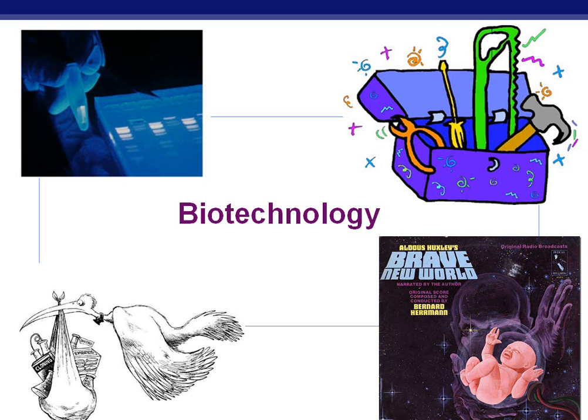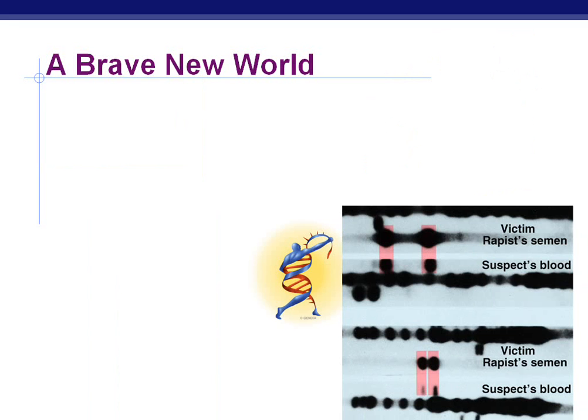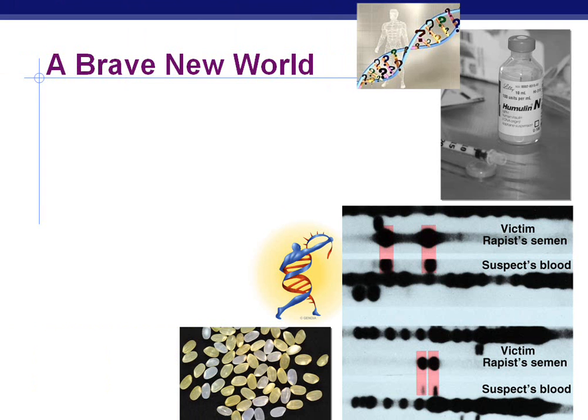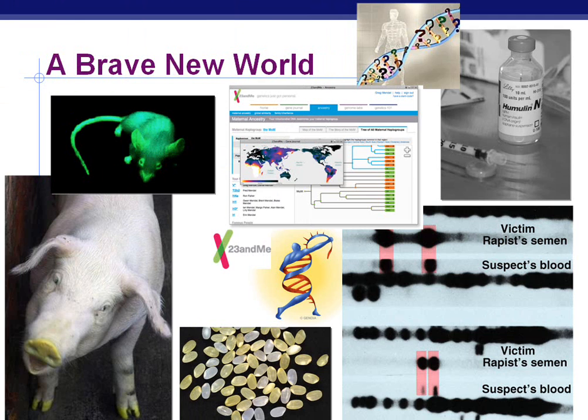Biotechnology often brings up lots of questions and intrigue as we learn more and more about the ways that we can manipulate genes, such as using it to identify true suspects and criminals in cases, manufacturing human insulin, various forms of rice, the human genome project, making parts of animals glow that didn't otherwise glow — very interesting stuff.